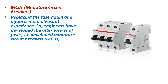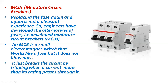Replacing the fuse again and again is not a pleasant experience, so engineers have developed an alternative called the miniature circuit breaker, or MCB. An MCB is a small electromagnet switch that works like a fuse — it prevents short circuits but does not blow out or melt. It breaks the circuit by tripping when a current more than its rating passes through it, so there is no need to replace it again and again.